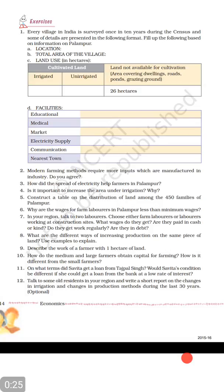Question number two: Modern farming methods require more inputs which are manufactured in industry. Do you agree? Modern farming methods mein jo technologies ka use kiya jata hai, kya wo sab industry mein banti hai? Aap is baat se sehmat hai? Yes, if you agree then you will write points about this.